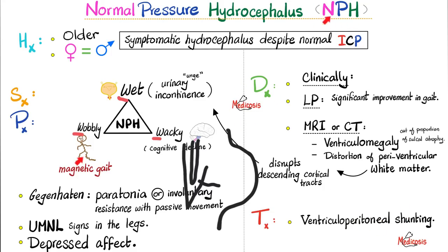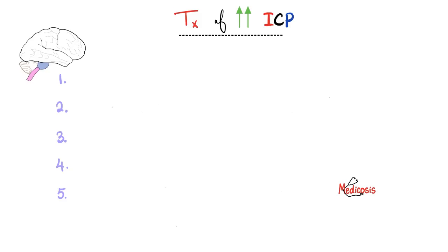So let's summarize. What is NPH? NPH is symptomatic hydrocephalus despite normal intracranial pressure measurement. Can you mention five different methods, whether medical or surgical, by which we can lower a patient's intracranial pressure? Let me know your answer in the comments. You'll find the answer key in my video titled Hydrocephalus, which is in my neurology playlist.